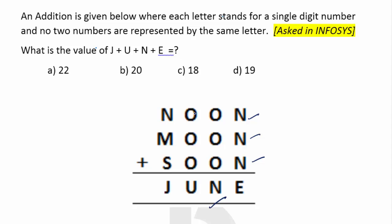Same fashion. Once again, if you add O, O, O, it makes U. And N, M, S makes June. So, noon plus moon plus soon have to give June. What is the value of J plus U plus N plus E? This is what is asked in the question.